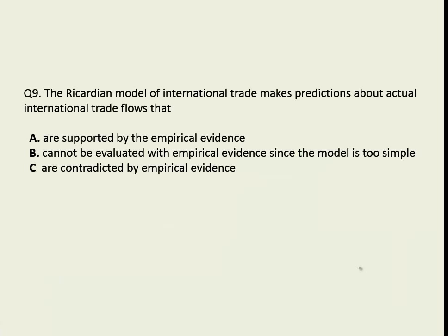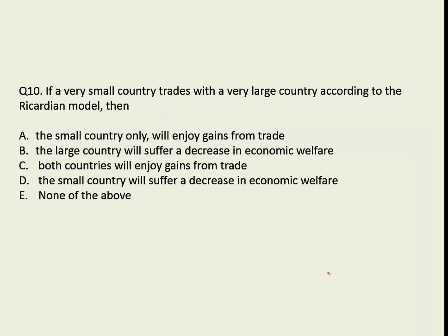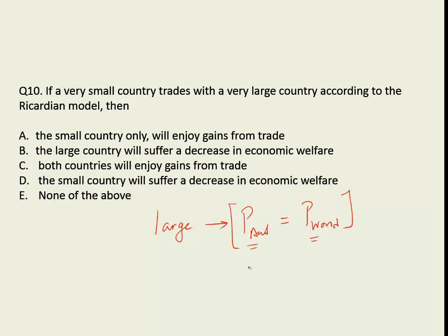Is the Ricardian model supported by empirical evidence? The answer is yes — please look in the slides. If a very small country trades with a large country, according to the Ricardian model, the large country's autarky prices would define what the world price will be. So for the large country, since the world price is the same as its closed economy prices, there are no gains to be made — but it doesn't lose from free trade, it just does not gain. So only the small country will enjoy gains from trade in this case. Thank you guys, I hope that helped.